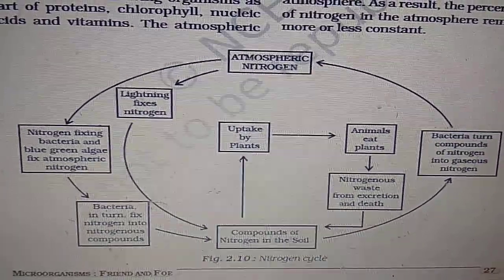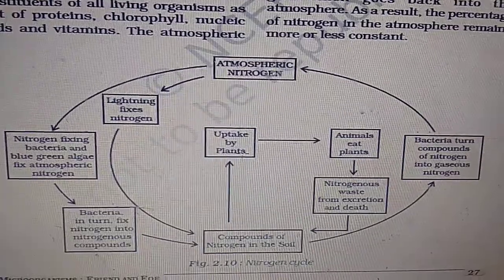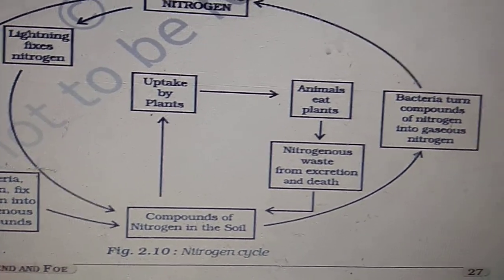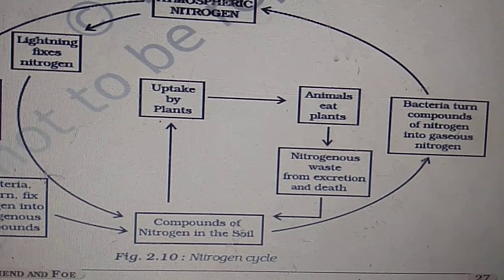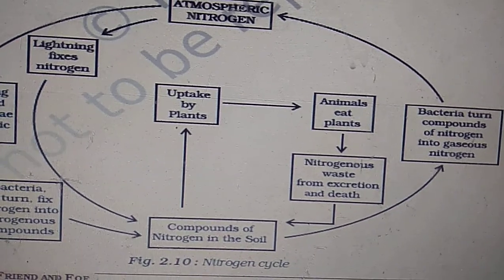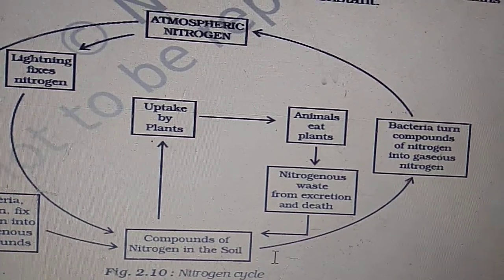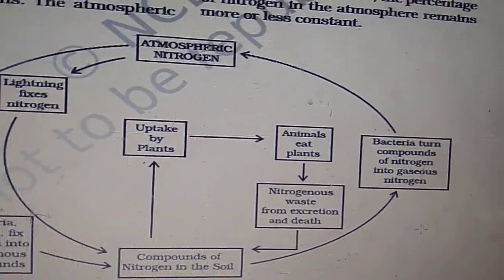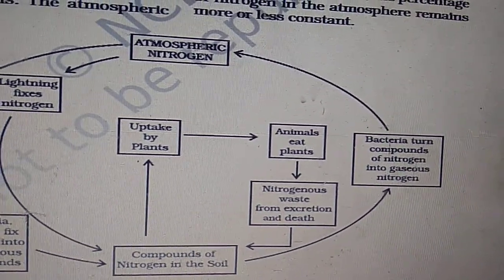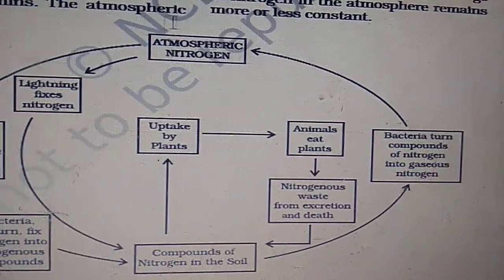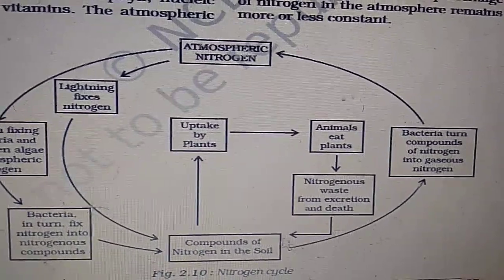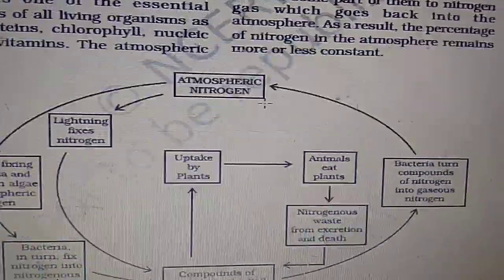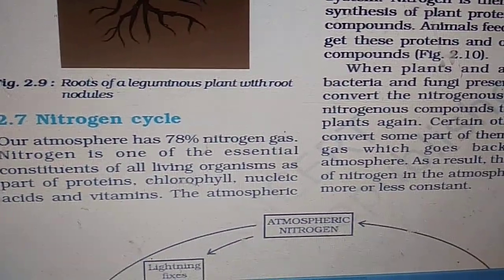Rhizobium is another example of nitrogen-fixing bacteria. The nitrates fixed in soil are taken up by plants. When animals eat these plants and excrete fecal matter, nitrogen returns to the soil. Denitrifying bacteria then break the nitrates back into gaseous nitrogen, releasing it into the atmosphere. This cycle continues — nitrogen goes from free atmospheric form to fixed form and back to free form — maintaining a constant level.